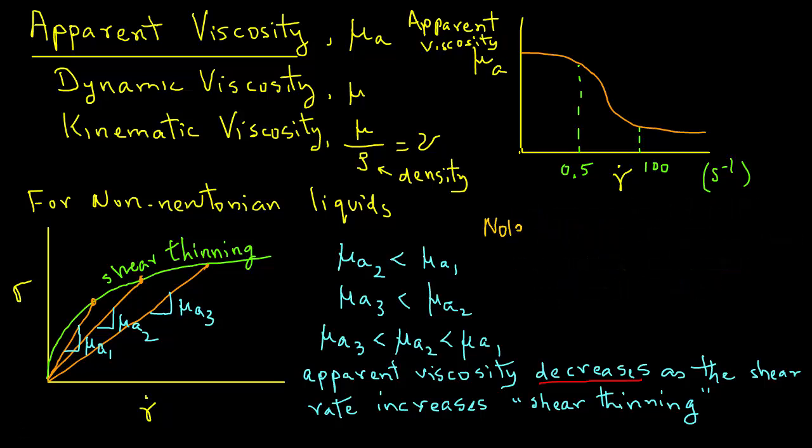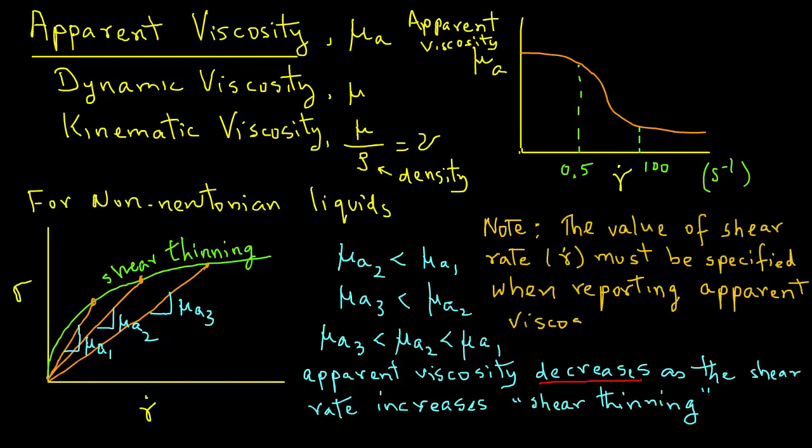A word of caution: whenever apparent viscosity is given, the corresponding shear rate must also be given. Otherwise, the value of apparent viscosity is meaningless. You may find in literature omissions such as these, where the authors may have overlooked giving the value for shear rate for the measured apparent viscosity.